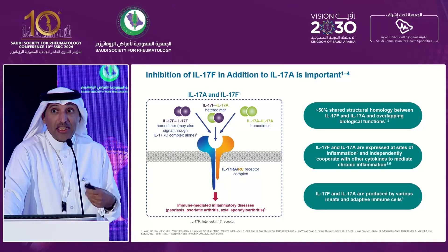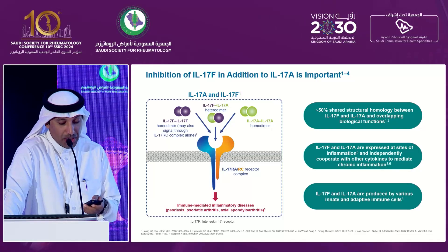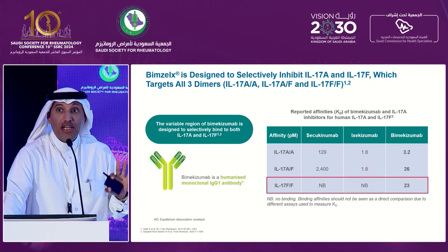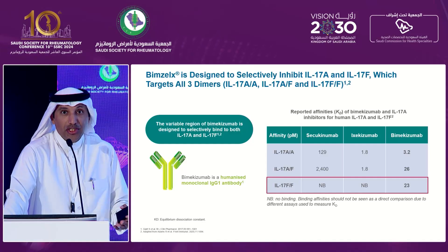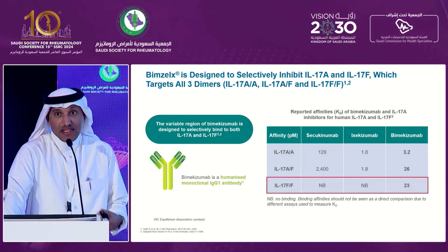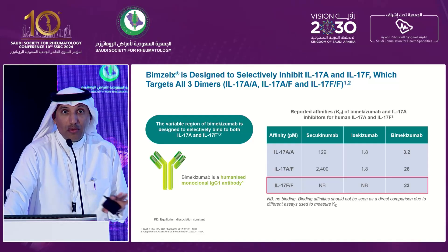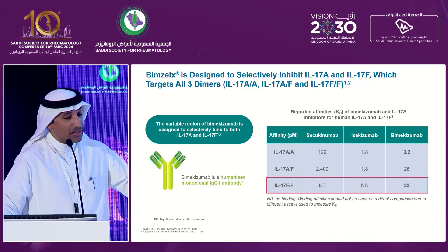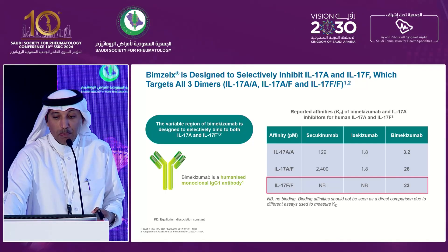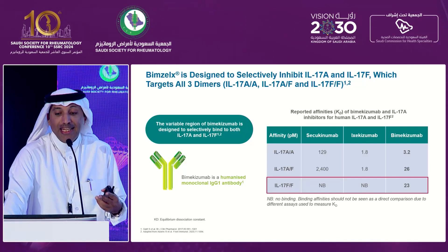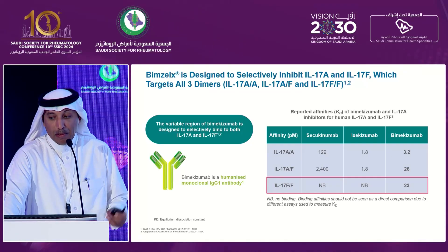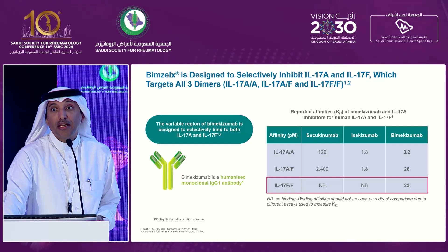We have three different IL-17 inhibitors — some people call them first, second, and third generation. The most important point is that the previous two available agents have no effect on IL-17FF. As you see in the slide, the affinity of different drugs to the different dimers of IL-17 shows that the previous two agents block IL-17AA and AF, but have no effect on the FF dimer. The only drug that blocks all three dimers is bimekizumab.